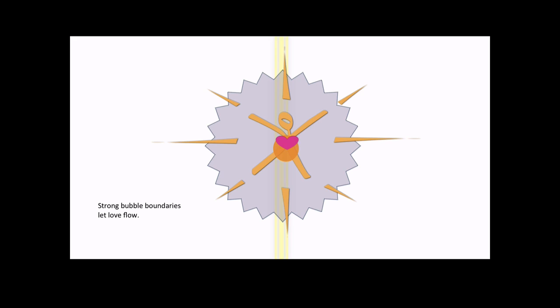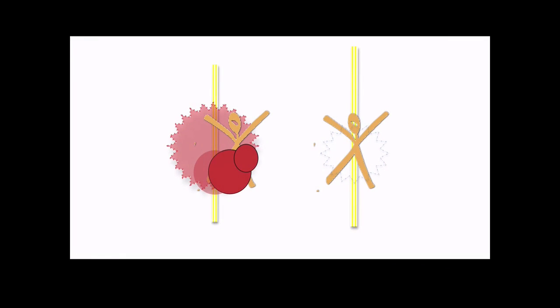Strong bubble boundaries let love flow in and out, around and through your energy bubble. You can also send love from yourself back to yourself within your energy bubble. You can always choose to stop or start this flow of love. Weak bubble boundaries let things other than love in and out of your bubbles.